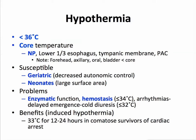Geriatric and neonate patients are susceptible to hypothermia. Why the elderly? They are losing some of their autonomic control and don't vasoconstrict as well. Neonates have a large surface area to lose heat from. What are some of the problems of hypothermia? Enzymes and proteins in your body do not function as well under colder conditions, so enzymatic function — especially the coagulation system — and hemostasis is impaired. Arrhythmias can occur, patients can take longer to awaken, kidneys don't work as well, and a cold diuresis can occur. But there are some potential benefits: inducing hypothermia down to about 33 degrees centigrade for 12 to 24 hours in comatose survivors of cardiac arrest has been shown to be of some benefit.